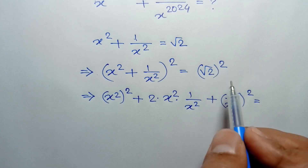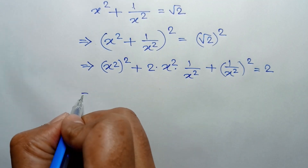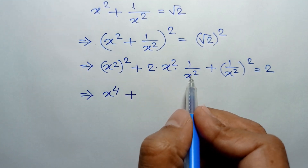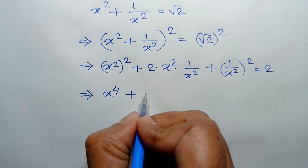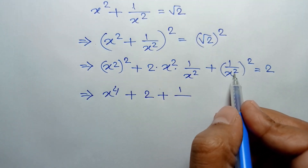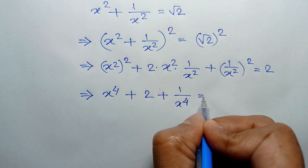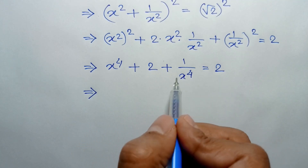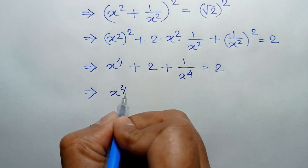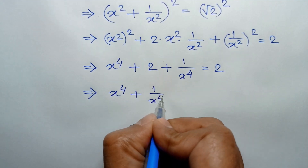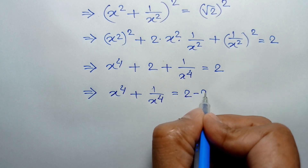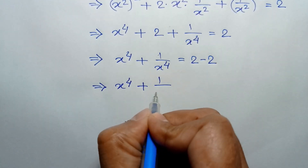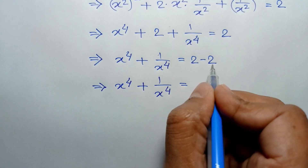This equals square root of 2 squared, which gives us 2. So x squared whole square is x to the power 4, the x squared and x squared cancel to give 2, and 1 over x squared whole square is 1 over x to the power 4, giving x to the power 4 plus 2 plus 1 over x to the power 4 equals 2. Taking 2 to the right side, we have x to the power 4 plus 1 over x to the power 4 equals 2 minus 2, which is 0.